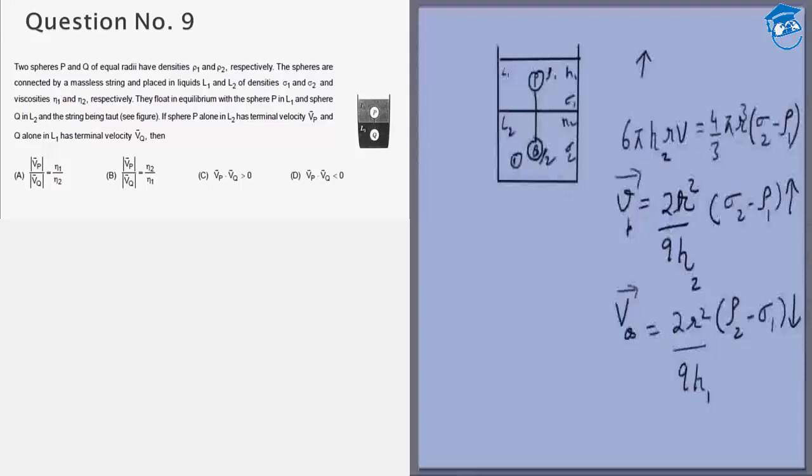So the first equation we can see is option D. Option D says that their dot product is less than 0, which is true because they are in opposite directions.